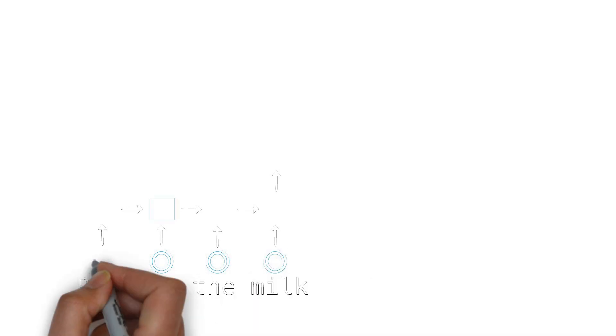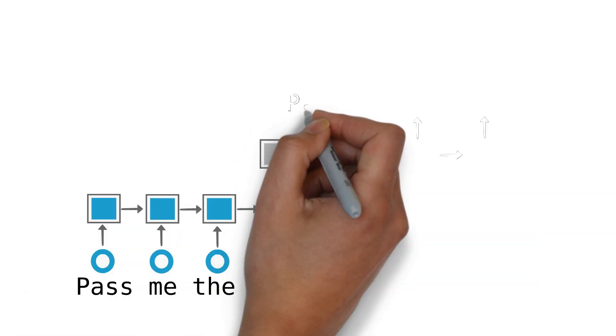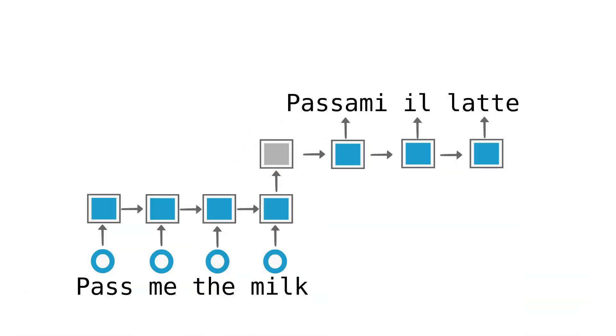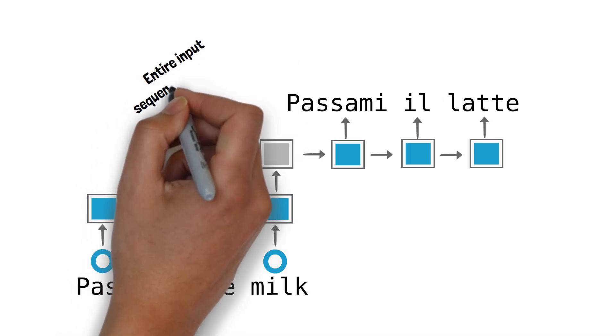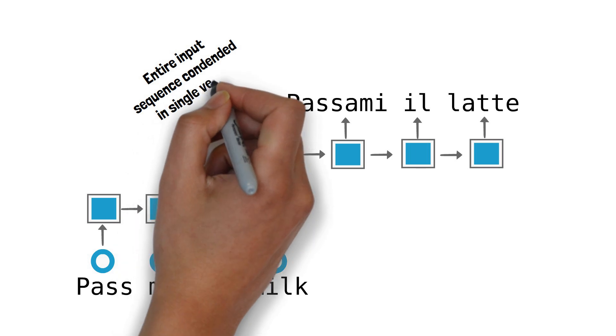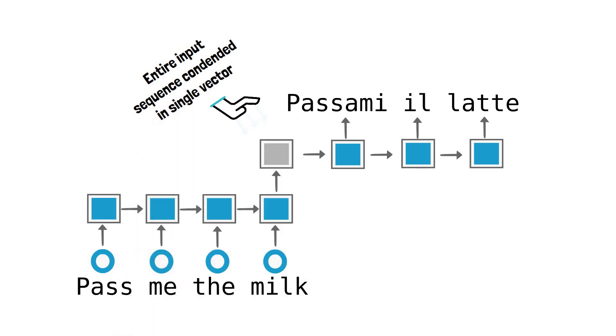The simple encoder-decoder translation model that we saw in the previous episode works, but it's got a fundamental issue. It condenses the entire input sequence information into a single vector. This becomes a challenge with longer input sequences.